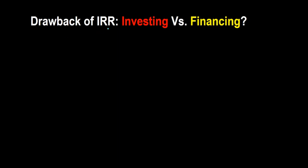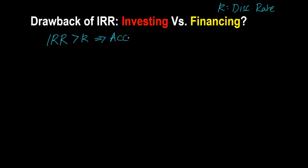Hello everyone. In this video I'm going to talk about how the IRR decision rule unfortunately has a drawback. Recall what is the IRR decision rule? The IRR decision rule is that if you calculate the internal rate of return of a project and it comes out to be greater than the discount rate — here K is my symbol for discount rate — then it makes sense to accept the project. It turns out that this decision rule cannot be used under certain situations.